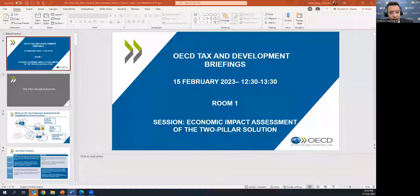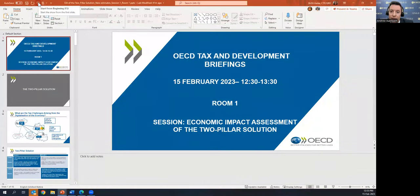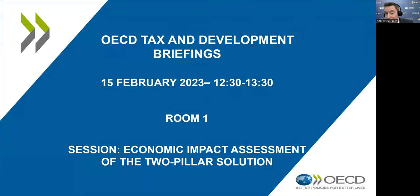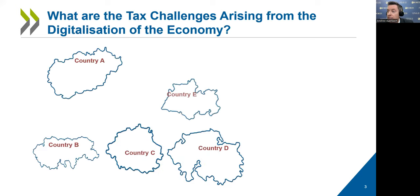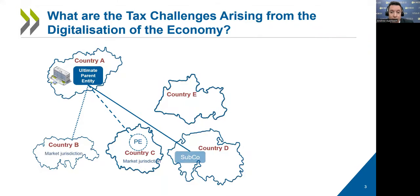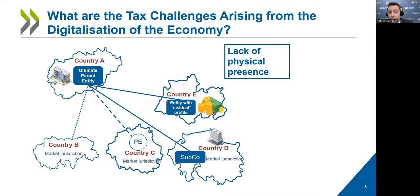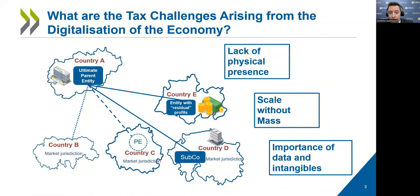The general approach of the two-pillar solution is to try and resolve and update the international tax rules that have presided for the better part of the last hundred years, and to try and modernize the system and in doing so stabilize it. Because if you look at large multinational enterprises, a company in country A may be doing all sorts of activity across many jurisdictions — a big company may have operations in over 100, 150 jurisdictions.